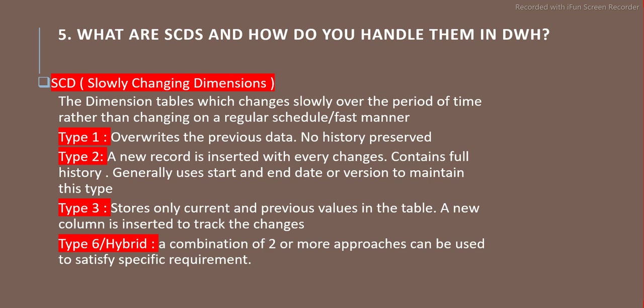Type 2 SCD maintains full history by adding a new row for each change, with additional columns such as a start date and end date to track different records over time.